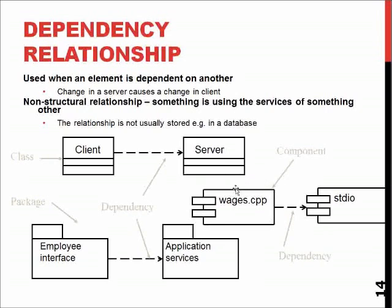The classical example is, in C programming, the standard input-output library. The C++ code doesn't actually include the standard library, but it is clearly dependent on it and needs the standard library to function properly.